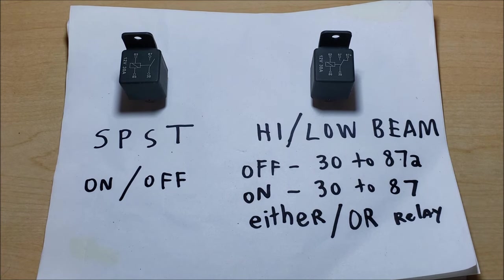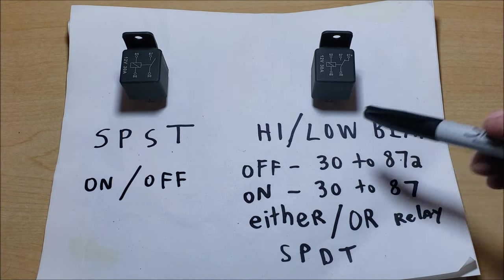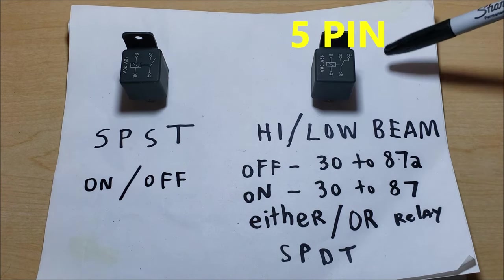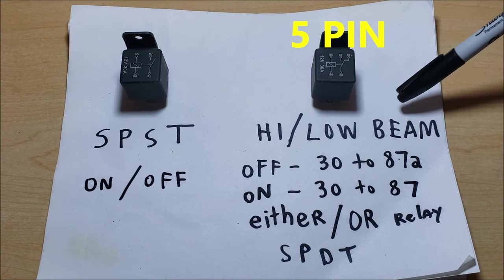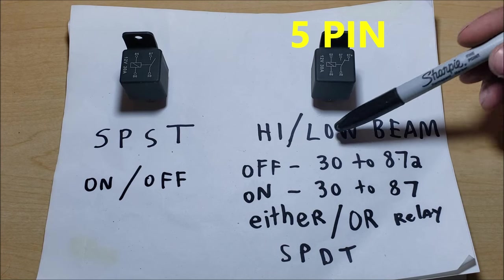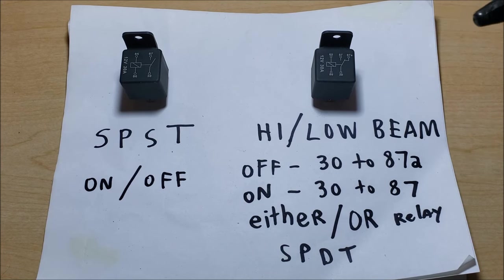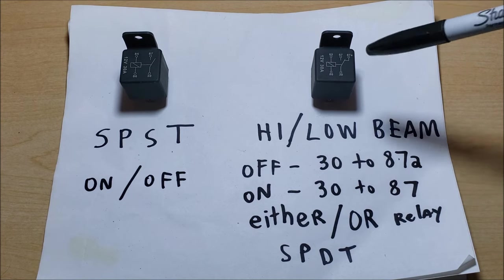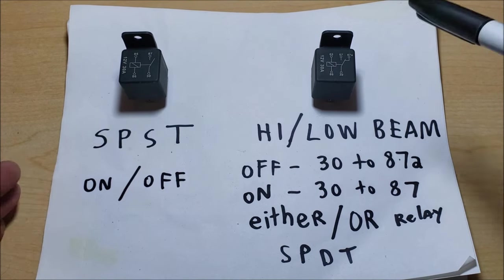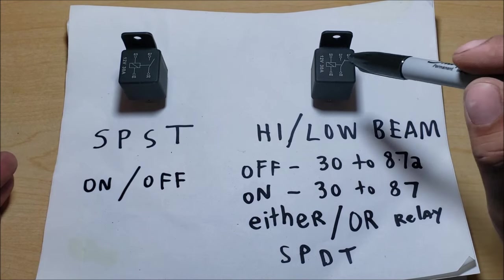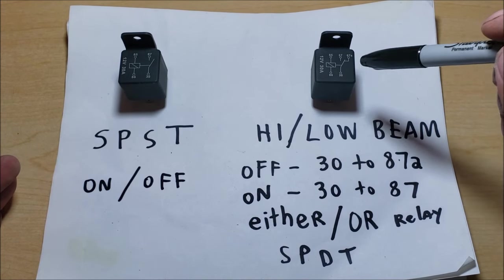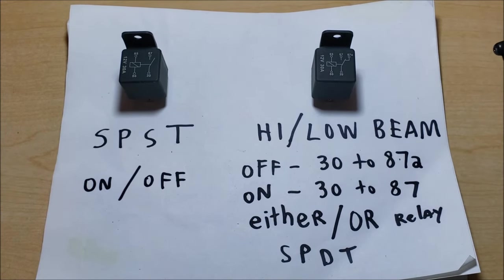So either or relay, high beam low beam relay, whatever you want to call it. Let's go ahead and throw single pole double throw in there because that can help when you're trying to learn this for the first time. This one is confusing when you're first getting into this, but we rarely use this. We mainly use this only for high beam low beam, some kind of auxiliary power hookups. Usually you never use this one whenever you're doing normal style projects.